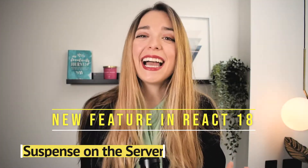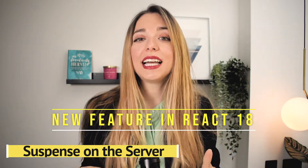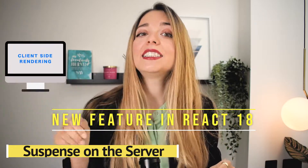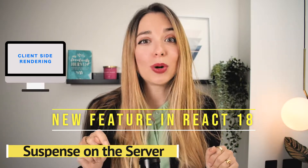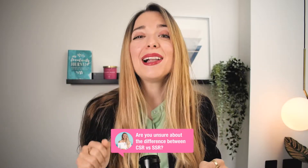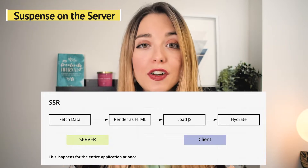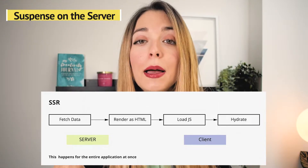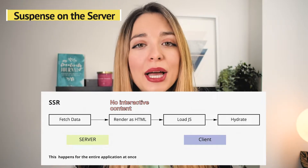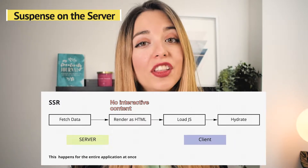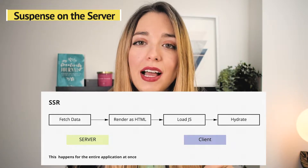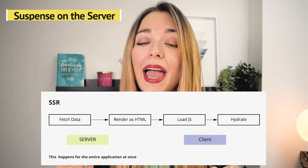Suspense on the server. To understand how Suspense on the server works, we first need to understand the difference between rendering a website using client-side or server-side rendering. The server fetches the data and then renders all the React components to HTML. So the first thing the user sees is the HTML structure and content, but the user cannot interact with it just yet. Meanwhile, we load the JavaScript for these components on the client and connect all the logic to the HTML rendered in the browser. It is at this point that the page becomes interactive — this is called hydration.